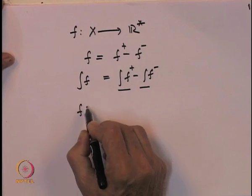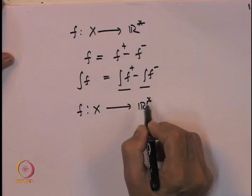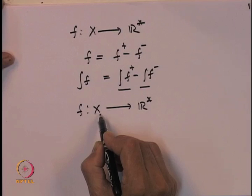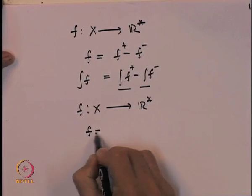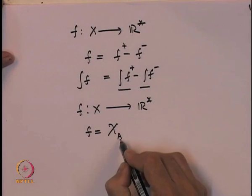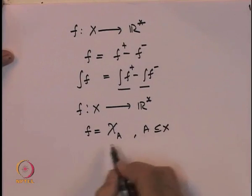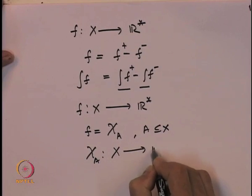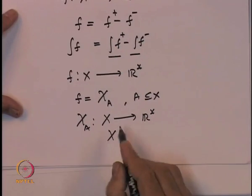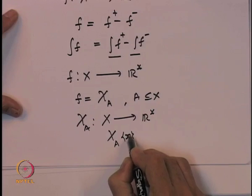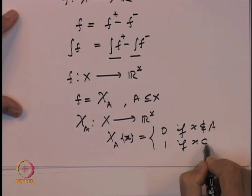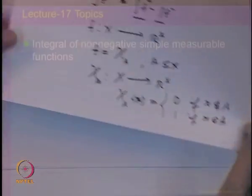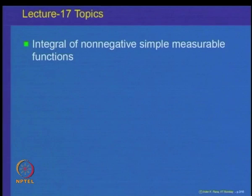For non-negative functions f on x to R star, we look at functions which are first of all very simple. For example, let us look at a function f which is the indicator function of a set A contained in x. This is the function which takes only two values. The indicator function of A at a point x is equal to 0 if x does not belong to A, and is 1 if x belongs to A.